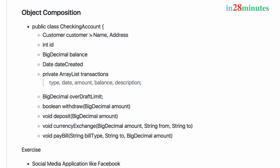We will also talk about an important concept called object composition. The classes that we create can contain instances of other classes. So a checking account here can contain a customer, which is also another class that we have created. We'll discuss object composition and how you can create state and behavior while using it.